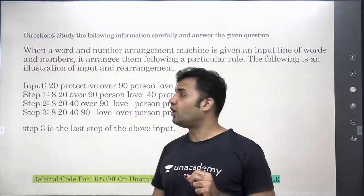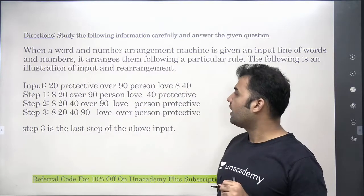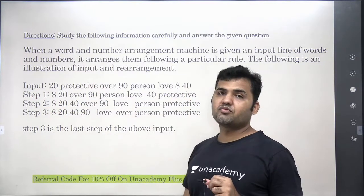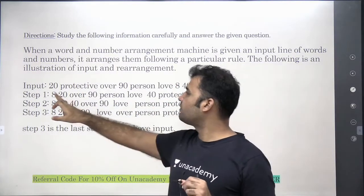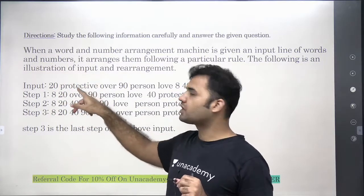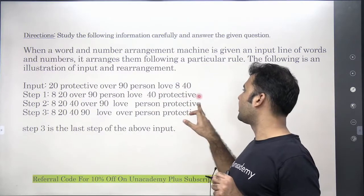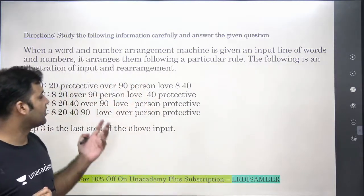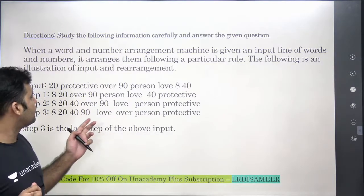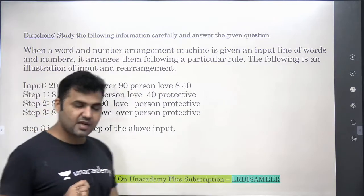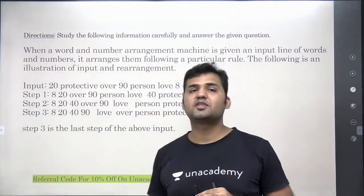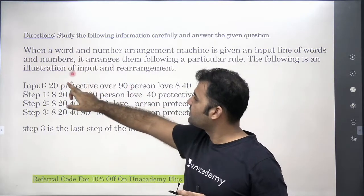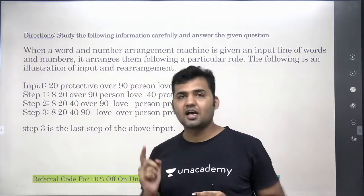Observe step number one. Comparing the input with step one, you see that two elements are moving. The word 'eight' was positioned here, but in step one eight is now at the leftmost position. And the word 'protective' has been moved to the rightmost position. Now some of you might be confused — both 'protective' and 'person' start with P. The first alphabet is the same, so you compare the second letter: R versus E. Since R is the larger alphabet, 'protective' is taken to the right-hand side.